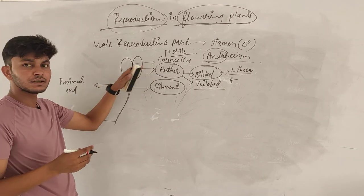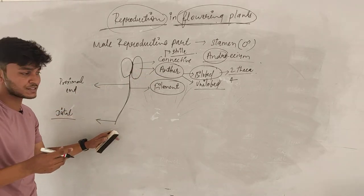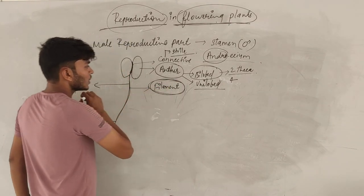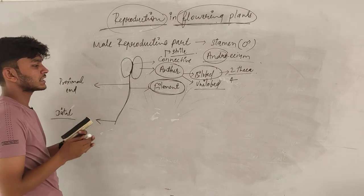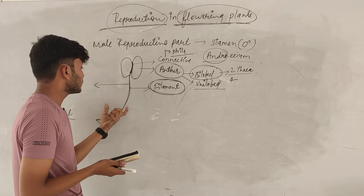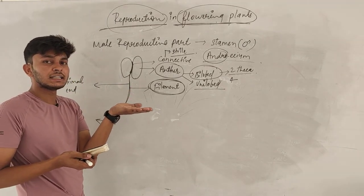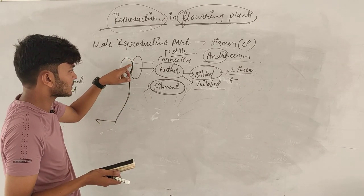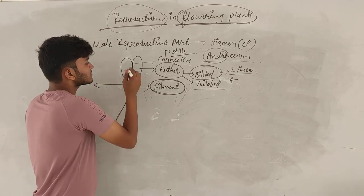The distal end of the filament is near to the anther, and the proximal end is near to the thalamus. There are two types of filament attachment. The filament can be attached at the base — that is basifixed. Or it can be attached at the middle — that is adnate.